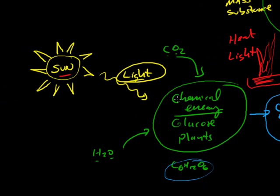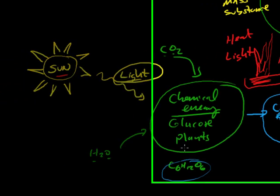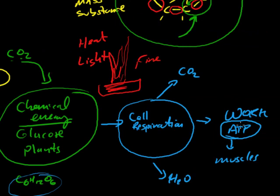And what comes off of that but heat and light. So our energy started in the sun, came out as light, was transformed into chemical energy. That chemical energy was transformed into another kind of chemical energy in the cells. And that resulted in work, the muscles doing work.